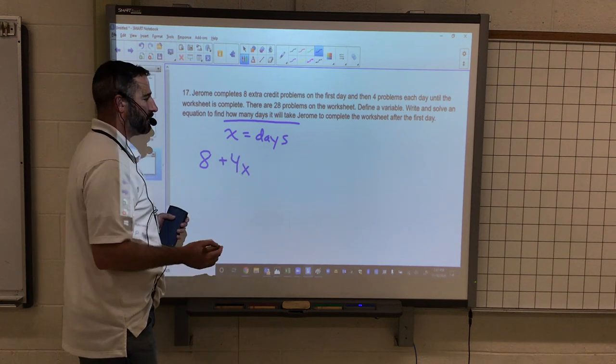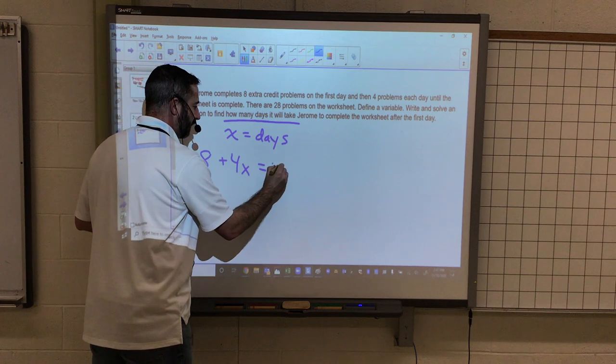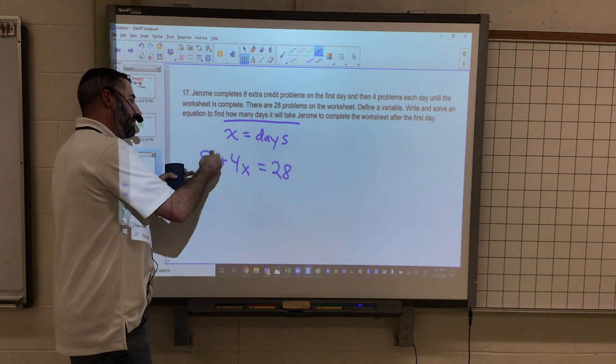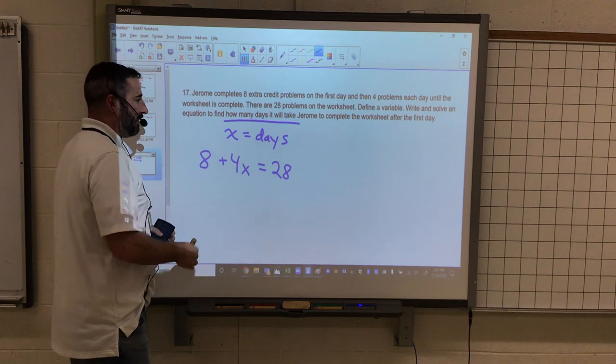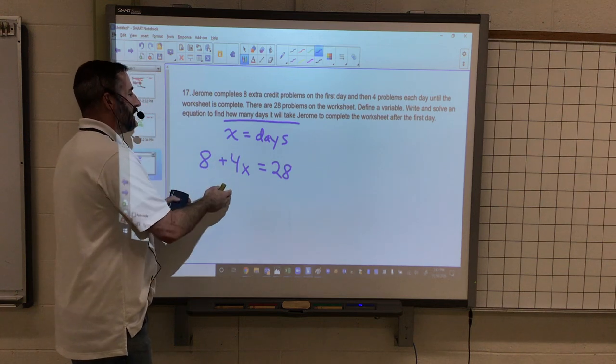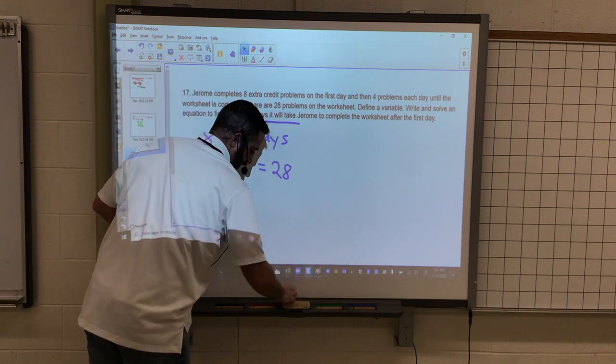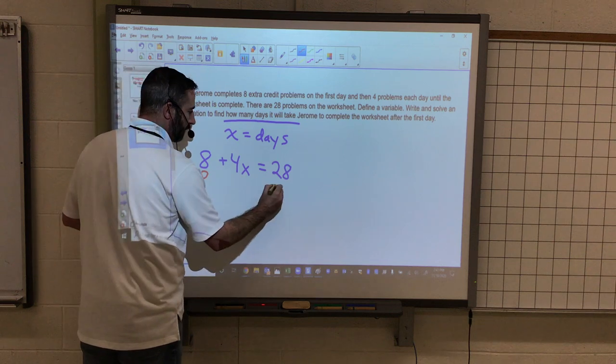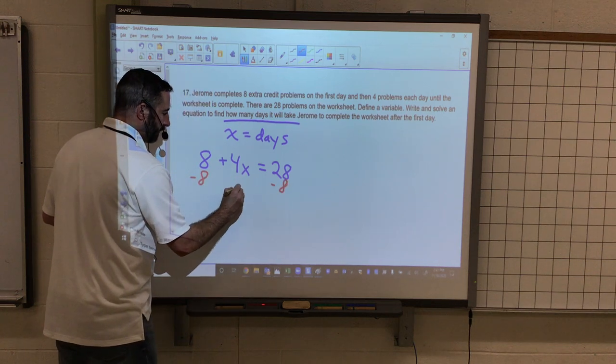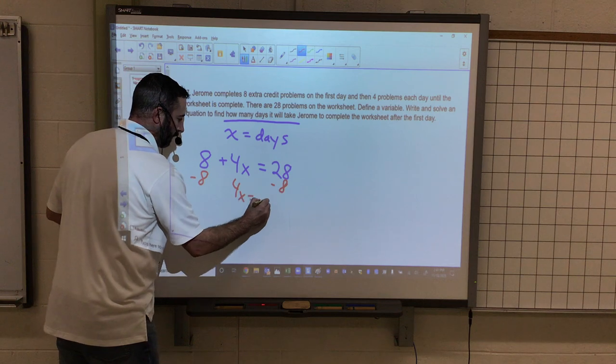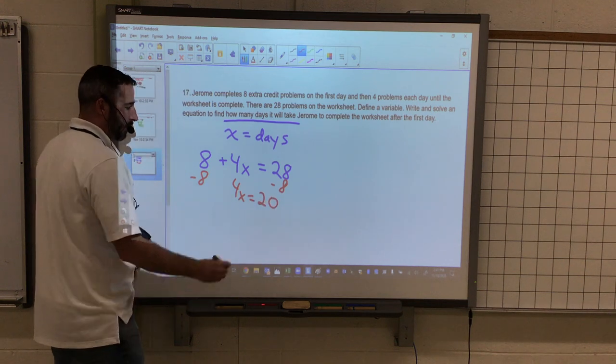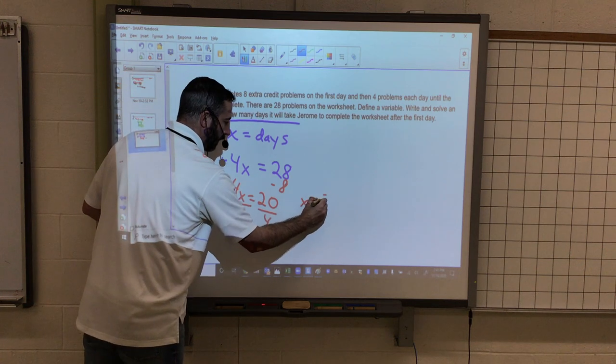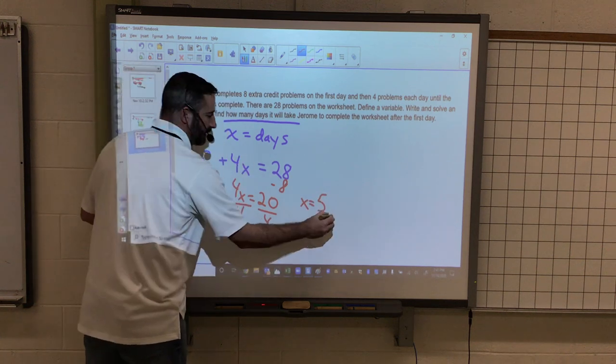There are 28 total problems on the worksheet. So that means this is going to equal 28. He started with 8 and then doing 4 per day. So now we've defined a variable and written an equation, so now we have to solve that equation. I'm going to use the inverse operation, which is subtracting by 8 on both sides. 4x equals 20. We divide by 4. x equals 5, and units is going to be days.